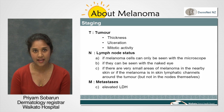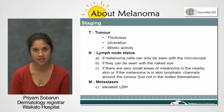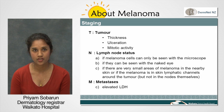N represents the number of lymph nodes involved with the melanoma. And M represents the presence of spread to other organs or elevation of a chemical made by the liver called lactate dehydrogenase.